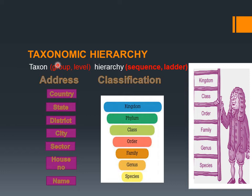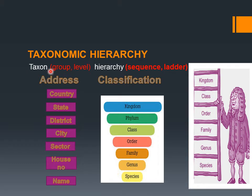As we learned in chapter number 1, we divided all organisms into five kingdoms. Just like a country is the largest unit, kingdom is the largest taxon and species is the smallest taxon. Taxon means group or level, and hierarchy means sequence or ladder — it is just like a ladder.